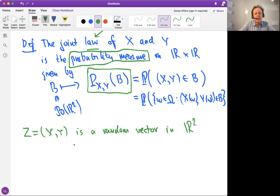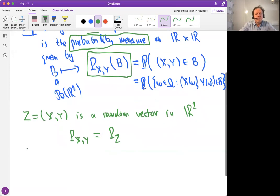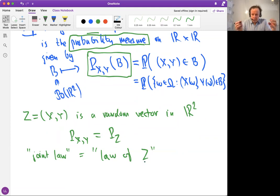Then actually what we see here is that the joint law of X and Y is actually just the law of this random vector Z. So what we call the joint law - it's just the law of one random vector Z. And we have already seen in previous lectures that given any random variable with values in any measurable space, the law of these types are always probability measures.